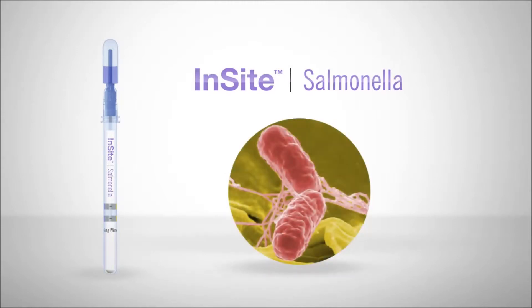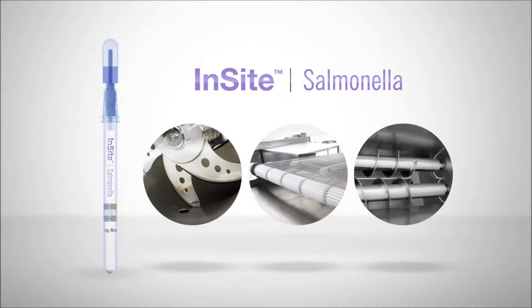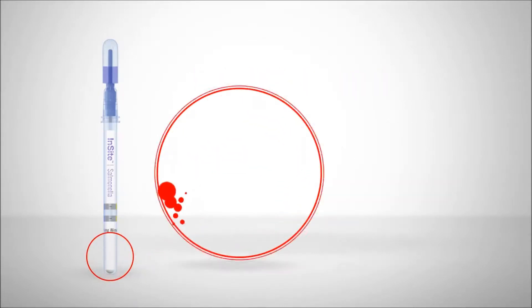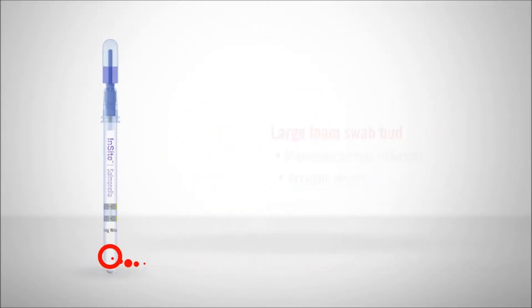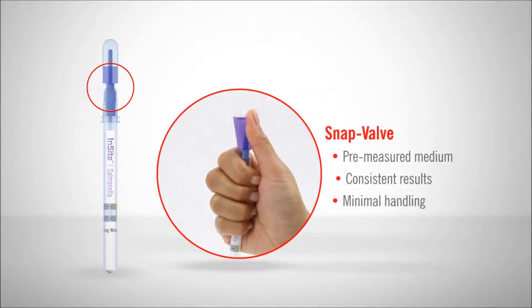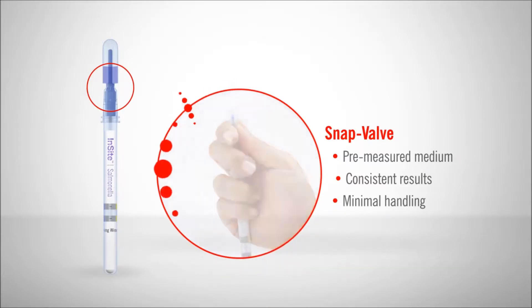Insight Salmonella is a screening test for Salmonella species on food contact surfaces and other processing equipment after cleaning. The sample collection device's pre-moistened swab bud and large foam sampler ensures maximum sample collection for accurate results. Hygiena's patented SNAP Valve is a pre-measured proprietary medium that provides consistent results with minimal handling.